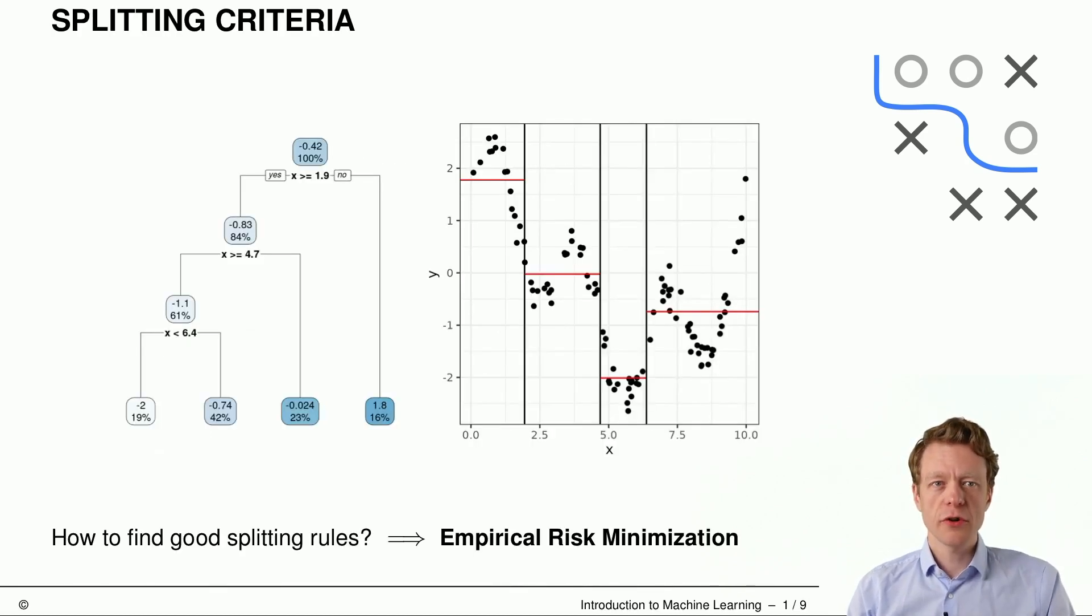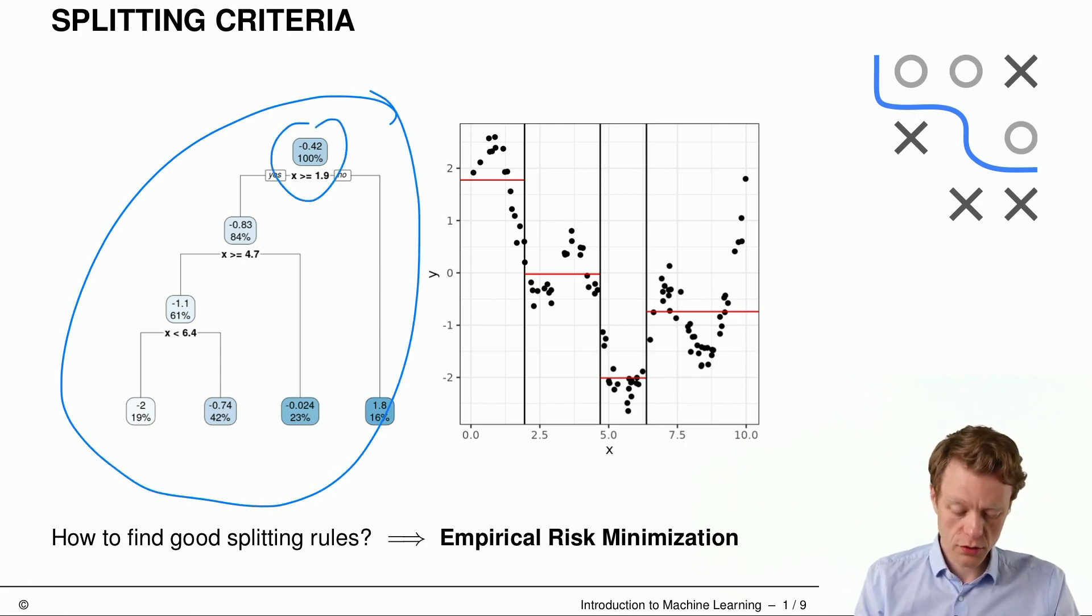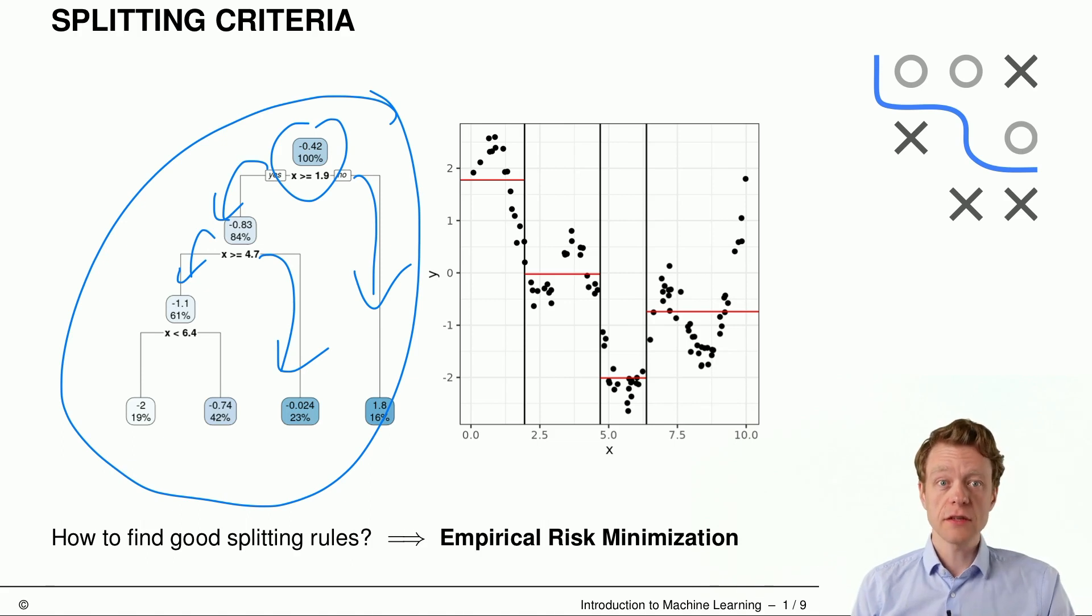By now, you should already know how a regression tree looks like. We had two different visualizations here on the left-hand side. You can clearly see this tree structure. We have the root node that is split into left and right child nodes recursively, and on the right-hand side you see for this regression example of one feature and numerical target variable how the prediction function looks like. Now the question is, how can we find those splitting rules? So why did we split here and there and there?